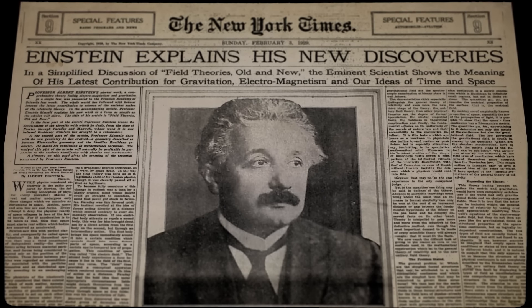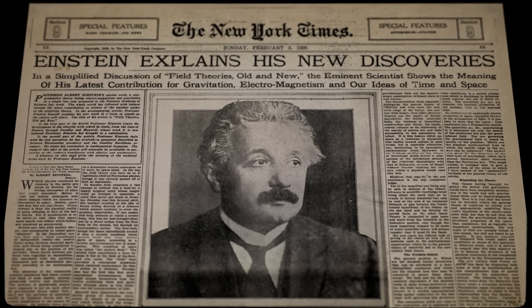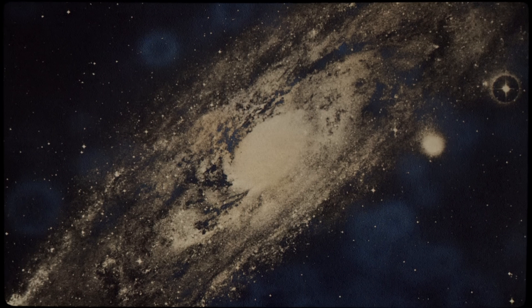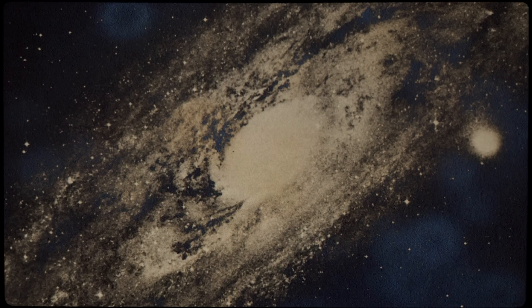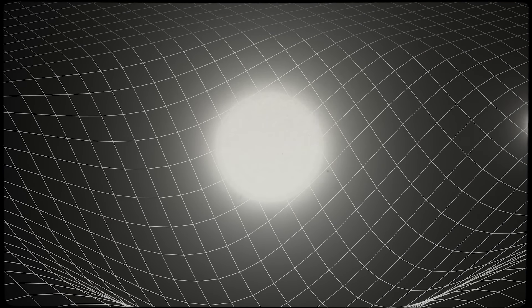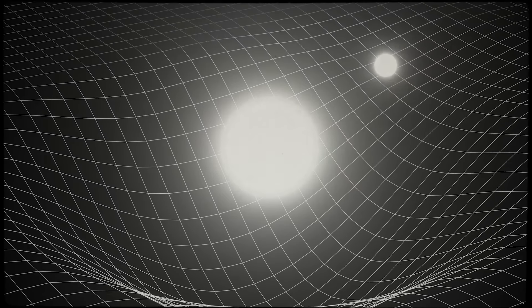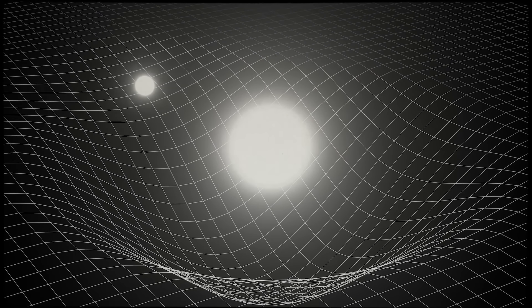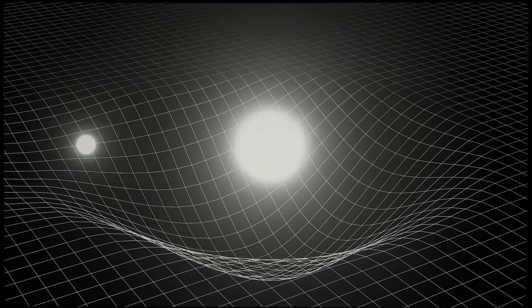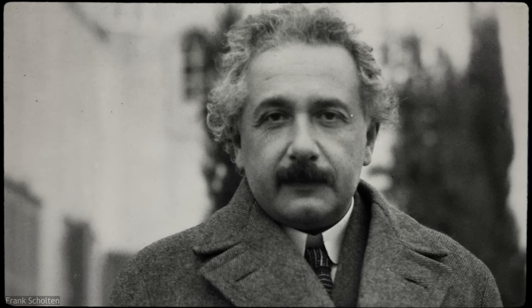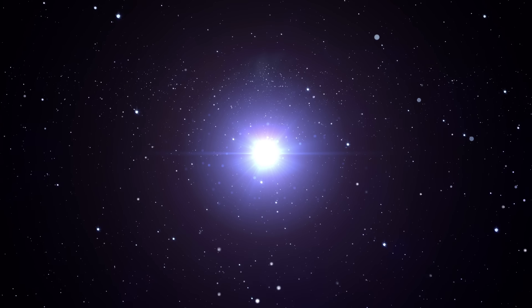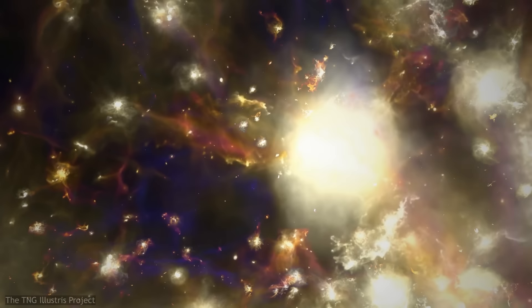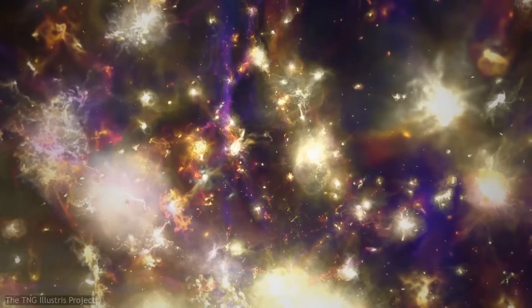He had just developed general relativity, and found numerous applications for it. And so he decided to take these newfound equations, and use them to describe the entire universe. After all, gravity is the only force that operates at large scales across all objects. And so the language of general relativity should have been more than capable of describing the evolution of the cosmos. Yet what he found surprised him. His equations naturally predicted a dynamic universe, one that was always in motion, with all objects, at large scales, either collapsing together or expanding away from each other.